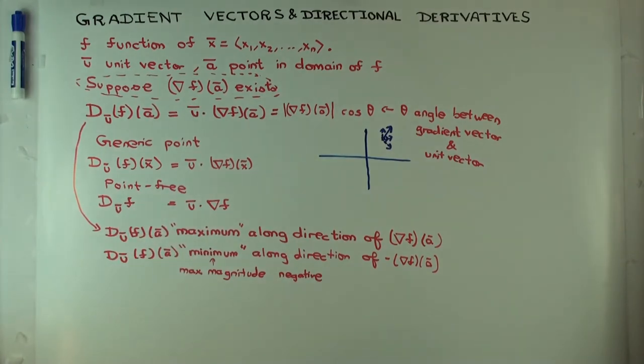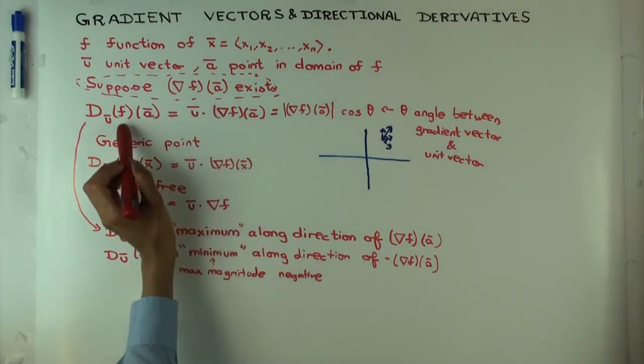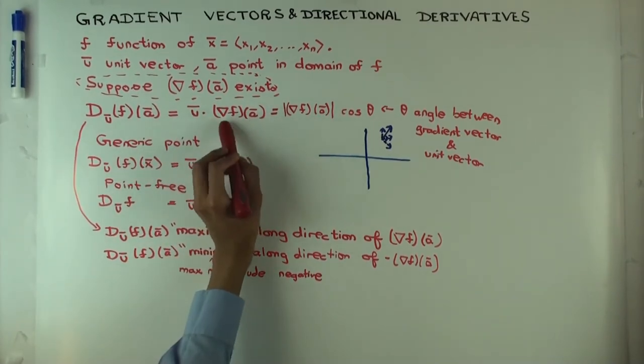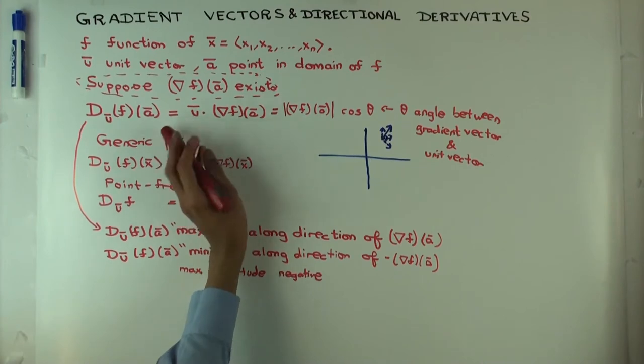What that means is, or rather what I didn't say is that you can have a situation where the directional derivatives exist, but the gradient vector doesn't exist, in which case this formula doesn't hold, right?